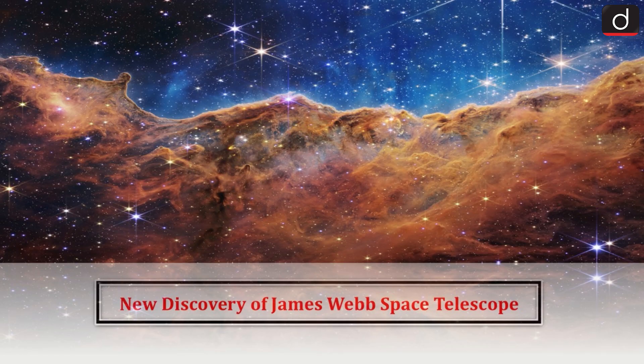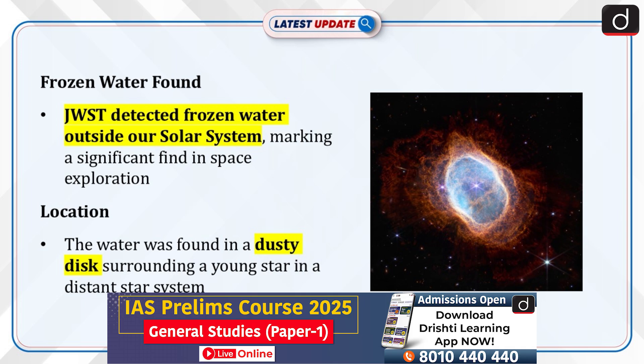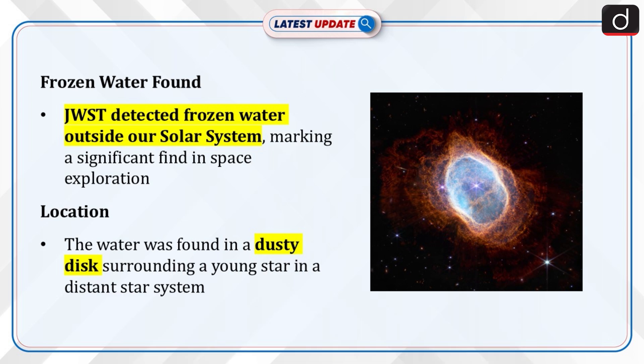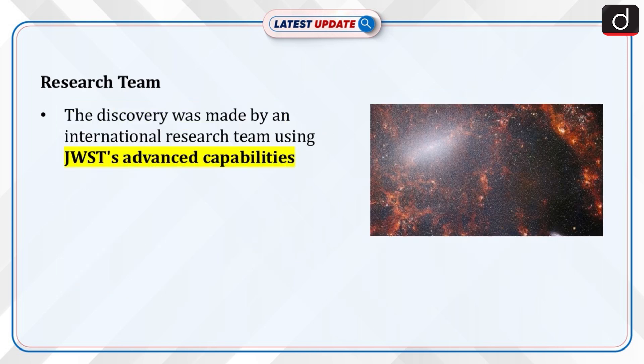Welcome to the latest update program. The topic of discussion is the new discovery of the James Webb Space Telescope. JWST has discovered frozen water outside our solar system. The discovery was made in a dusty disk around a young star in a distant star system. The research team detected a key signature of water ice at a wavelength of three microns, which is a telltale sign of frozen water coating dust grains in the disk.